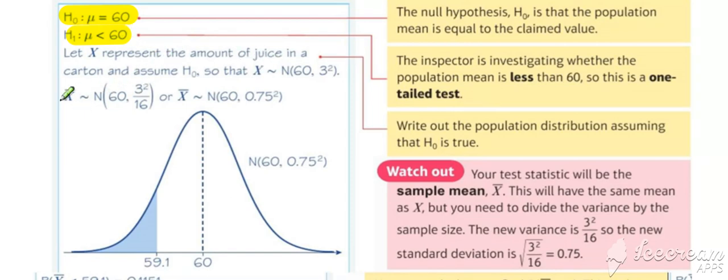It's worth writing down the distribution of x bar for your problem. Be careful whether you're given standard deviation or variance. We were given a standard deviation of 3, so a variance of 3 squared. To make it the distribution of x bar, we divide through by the sample size of 16. So we get x bar normally distributed with mean of 60 and a standard deviation of 0.75.